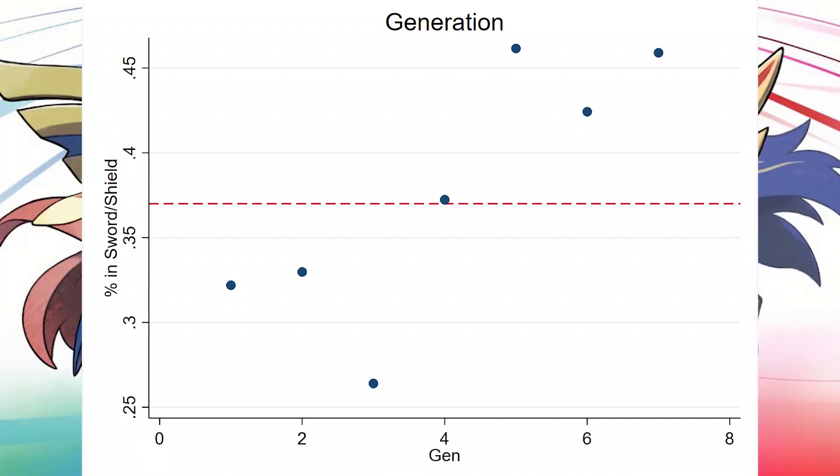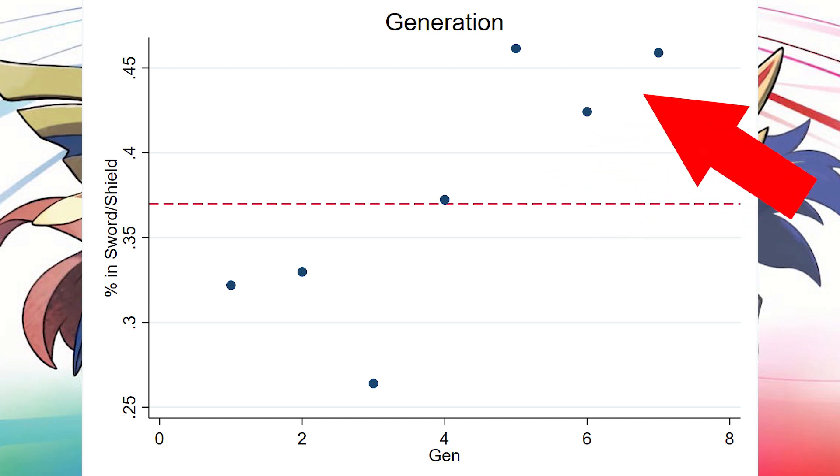Now I want to look at factors that were not mentioned in the official announcement. A big complaint when these announcements were made was that first-generation Pokemon are always included — there's just too much weight given to those. So let's look at the probability of being included based on the generation you come from. This is actually the strongest result we see: earlier generations are underrepresented relative to later generations. You're much more likely to be in this game if you're from a later generation. That surprised me, because I recognize those Pokemon appear heavily in marketing — but when it comes to actually putting them in the game, they're underrepresented relative to what we would expect.